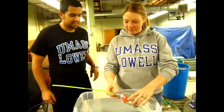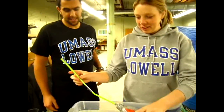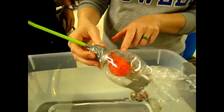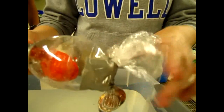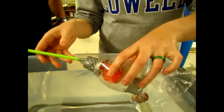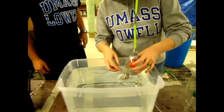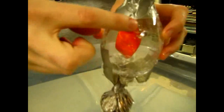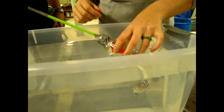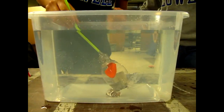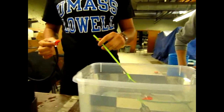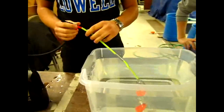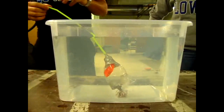Now we have our setup complete. We've got a straw sealed into the bottle with a balloon attached, and weights taped to the end of our submarine. We're going to put it into the tub of water. There are holes in the bottom of the submarine and we'll let the water fill up the container. Now that the submarine is filled up with water, we're going to connect the compressor to the straw, put air into the balloon, and you'll see the submarine floating.